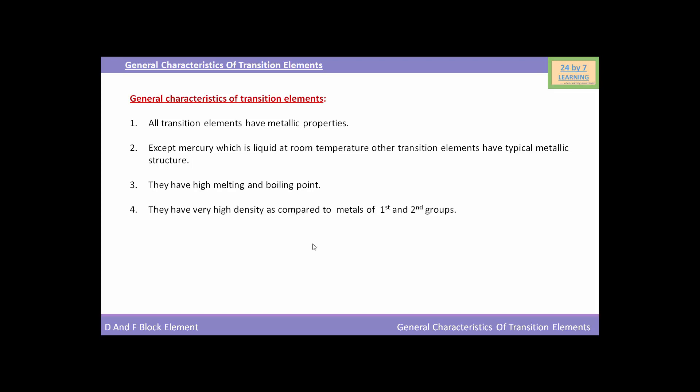All transition elements have metallic properties except mercury, which is liquid at room temperature. Other transition elements have typical metallic structure. They have high melting and boiling point. They have very high density as compared to metals of first and second groups.